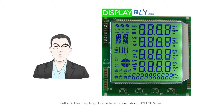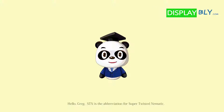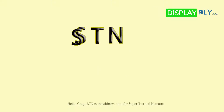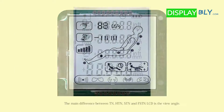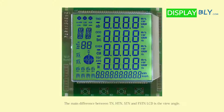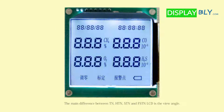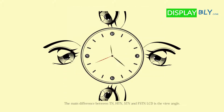I came to hear about STN LCD screens. Hello Greg. STN is the abbreviation for super twisted nematic. The main difference between TN, HTN, STN, and FSTN LCD is the view angle.